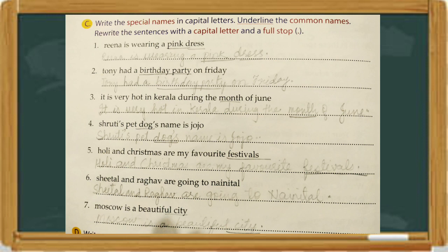Shruti's pet dog's name is Jojo. Shruti is a special name, so write S capital. Dog is common, so underline dog. And Jojo is a special name of a dog, so write J capital. Holi and Christmas are my favorite festivals. Both Holi and Christmas are special names of a festival, so write H capital and C capital. Underline festivals.